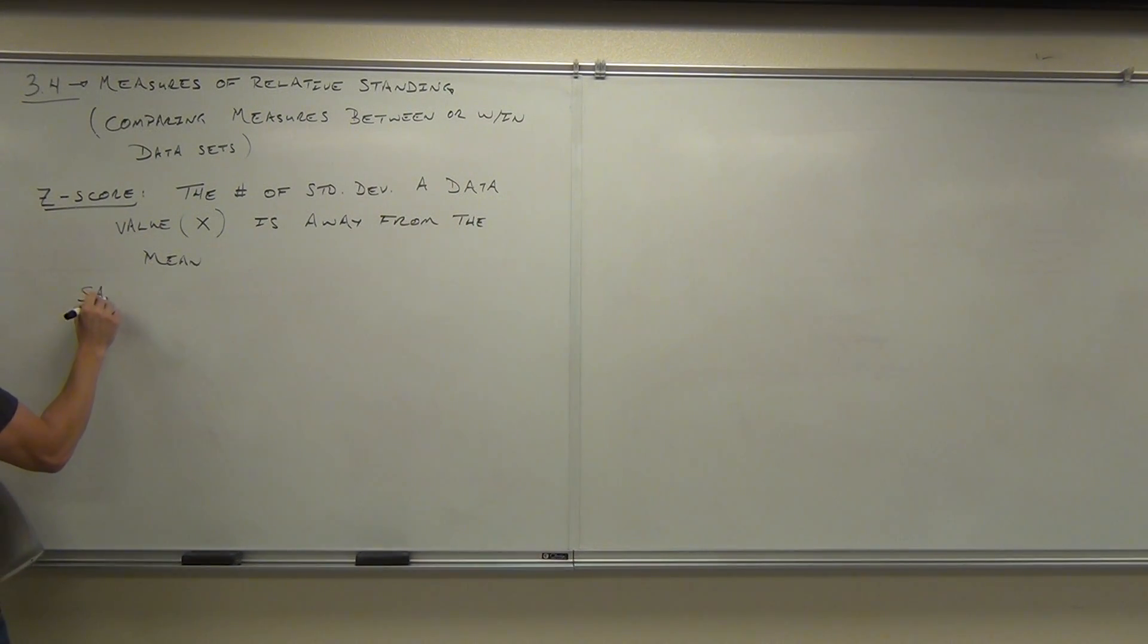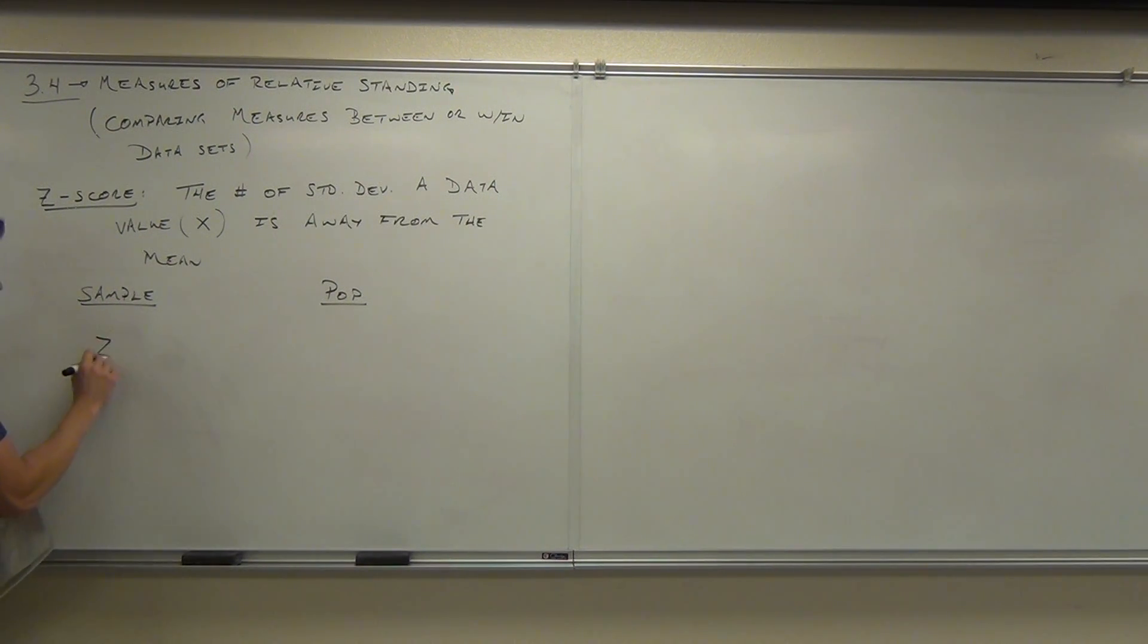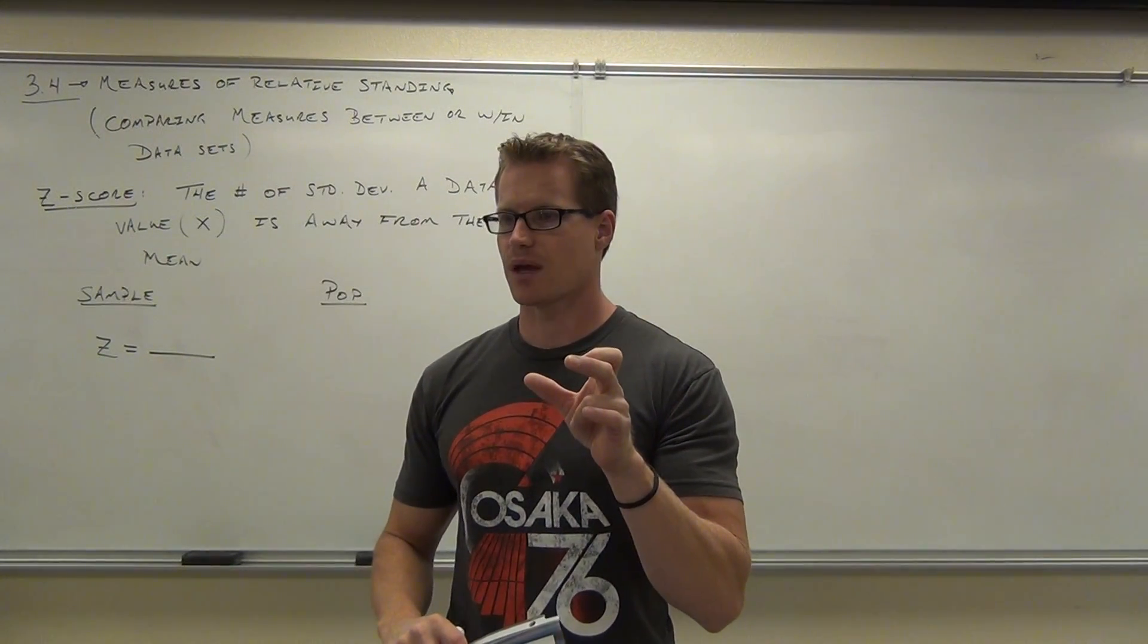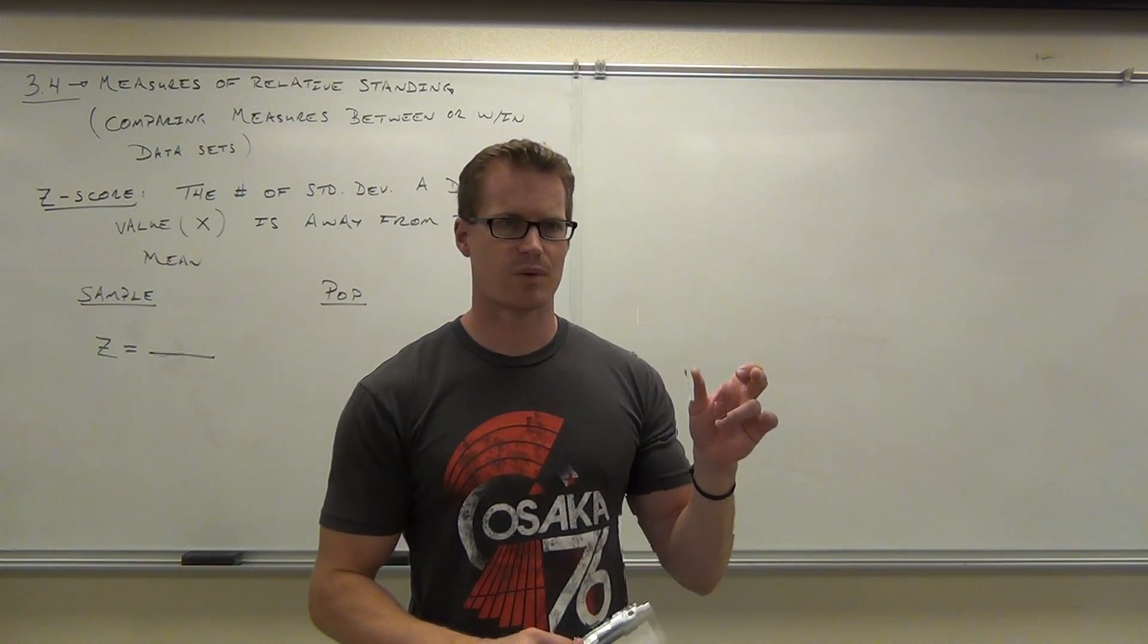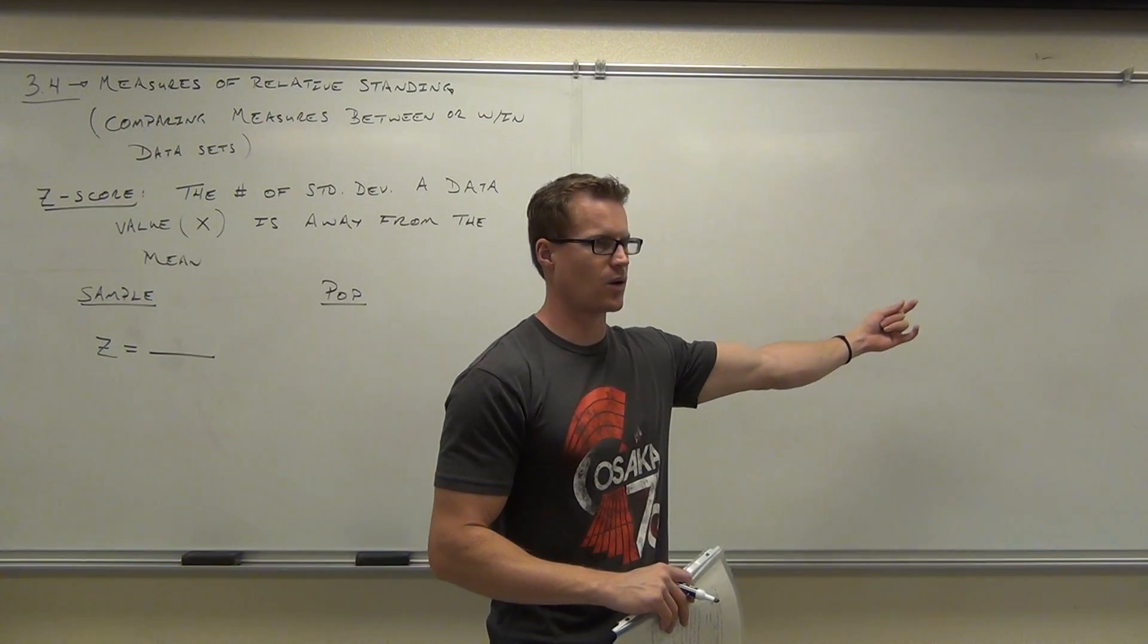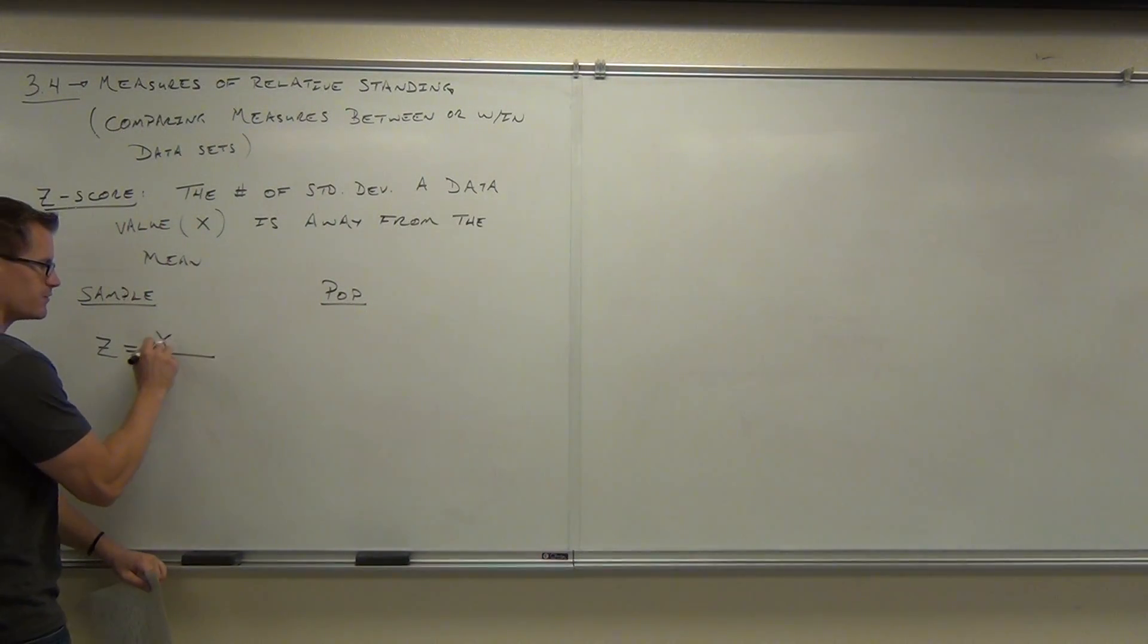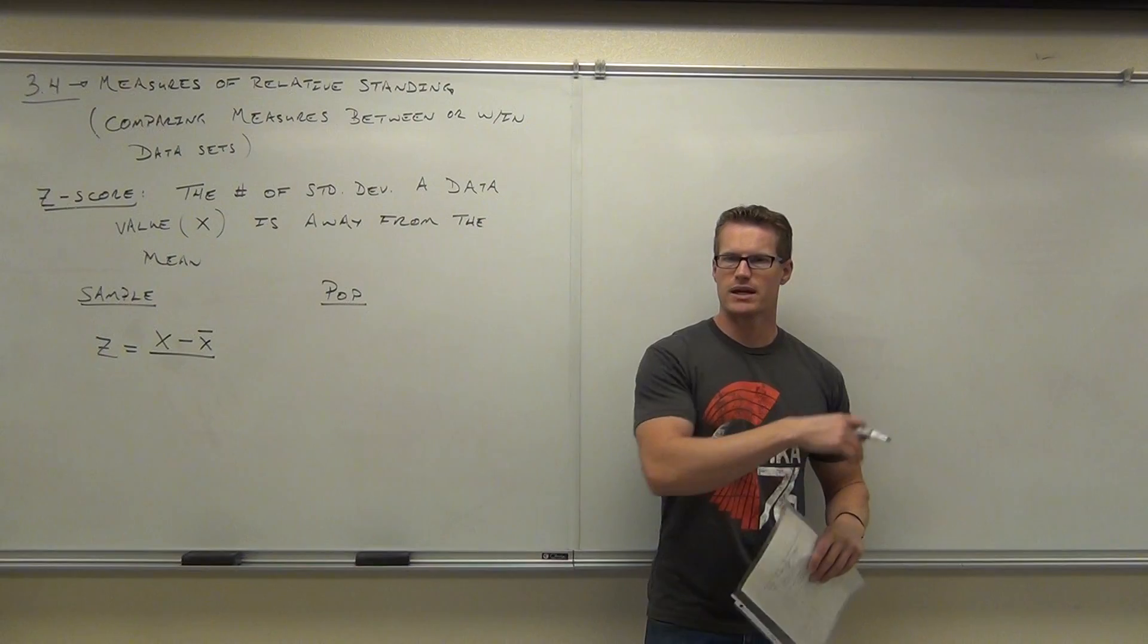For our sample and for our population, the way you calculate it is identical. So for our sample, we'll have z, that's z-score. Here's how a z-score works. What we did last time is we found the distance between a data value and the mean. How can you find a distance between two numbers? You're going to subtract them. We subtracted the large value minus the mean. We got that distance there. I think it was 24 or something. So we're going to subtract. Take your data value, subtract your mean. By the way, for the sample, the mean is going to be x-bar.